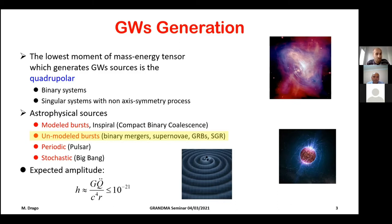As Alex already mentioned, in the collaboration we usually identify four types of sources according to how we search for them. In this talk we will speak about the second type, what we call the unmodeled burst — transient signals limited in time where we don't know exactly the waveform shape. We can make some models, but the modeling may not characterize all types of sources. It is also possible that compact binary coalescences are captured by these algorithms, even though they are not specifically designed for them.